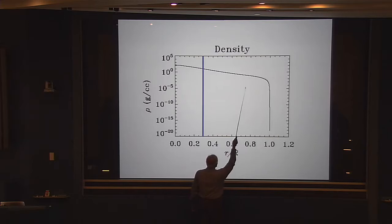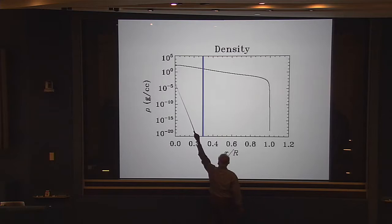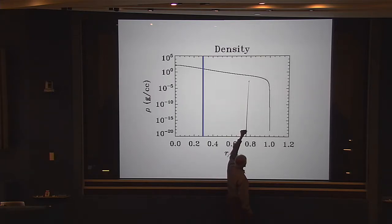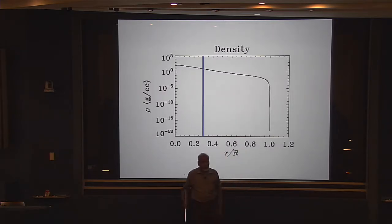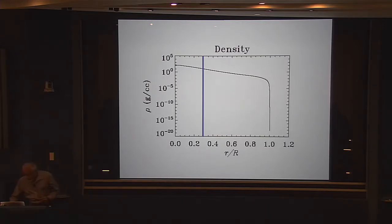The convection region starting from seven-tenths outward has two parts. One part is the skin of the sun — about one percent of the solar radius — which you can actually observe more or less. Then there's the rest, where the density stratification is not as large. On the surface of the sun you can see what's happening through an optical telescope.